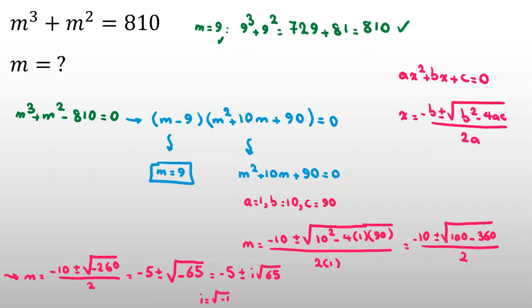So, we've solved this problem completely in real numbers. We found only one answer, m equal to 9. And in complex numbers, we found three answers, m equal to 9, m equal to negative 5 plus minus i root 65.